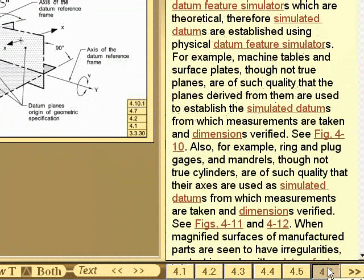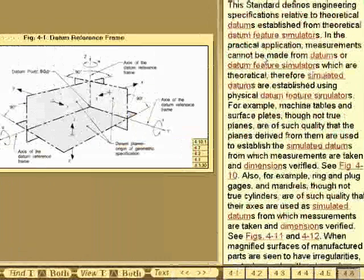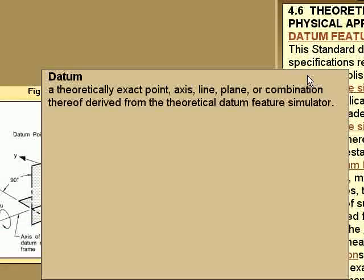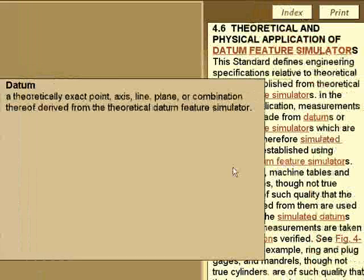There are hundreds of hot words in the software. To view a definition, simply click on the hot word and that definition appears in a pop-up window. When you have read the definition, click again and it will disappear.